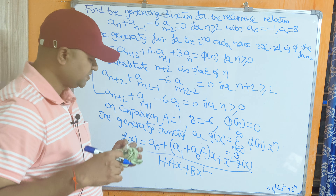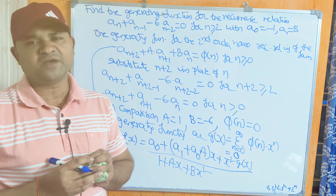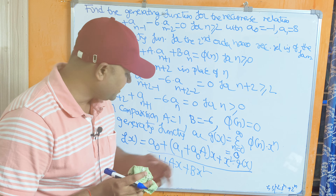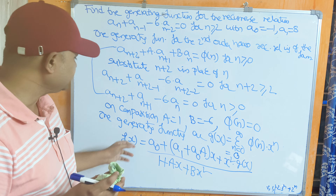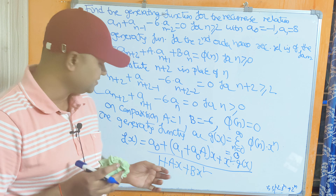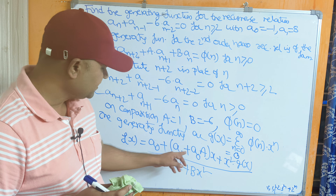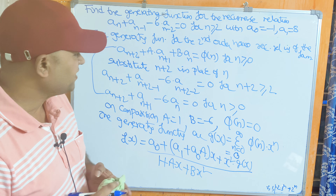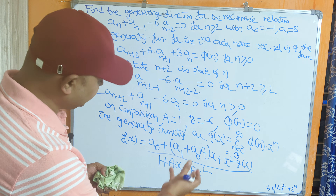For a first order homogeneous recurrence relation the formula would be [a₀ + a₁·x] / [1 - a·x], which is different. For a second order recurrence relation we use: f(x) = [a₀ + (a₁ + a·a₀)·x + x²·g(x)] / [1 + a·x + b·x²].